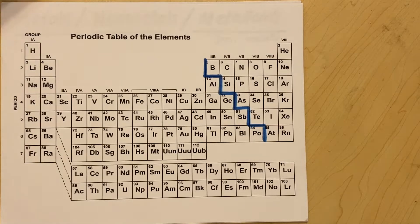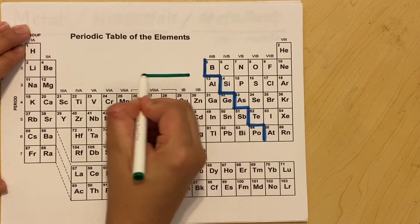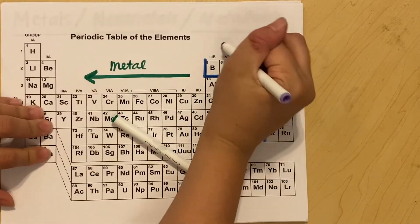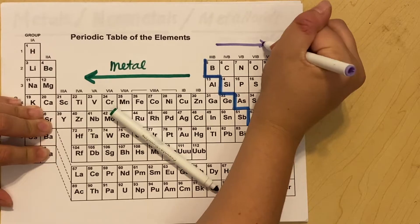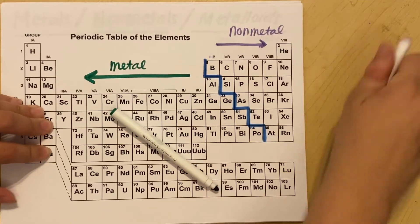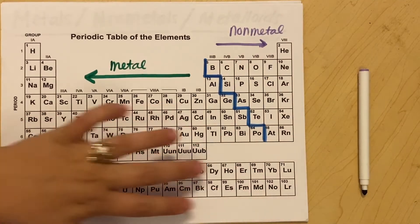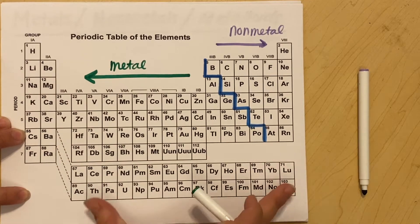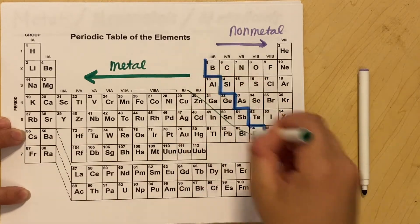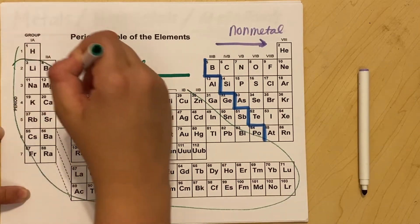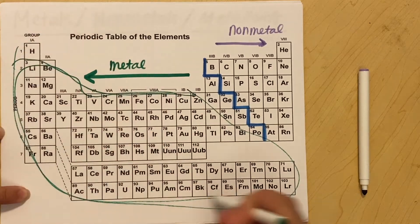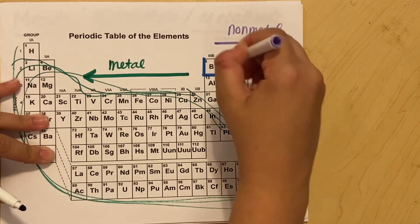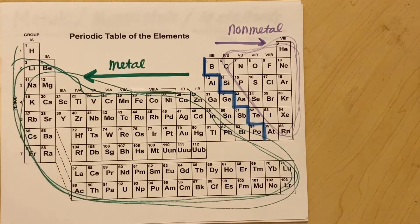Anything on the left side of your stair step is going to be a metal. Anything on the right side of your stair step is going to be a non-metal. And remember that these guys down here, your inner transition metals, even though technically these are kind of to the right of that stair step, remember that these fit into here. So all of this stuff, this is all metal.